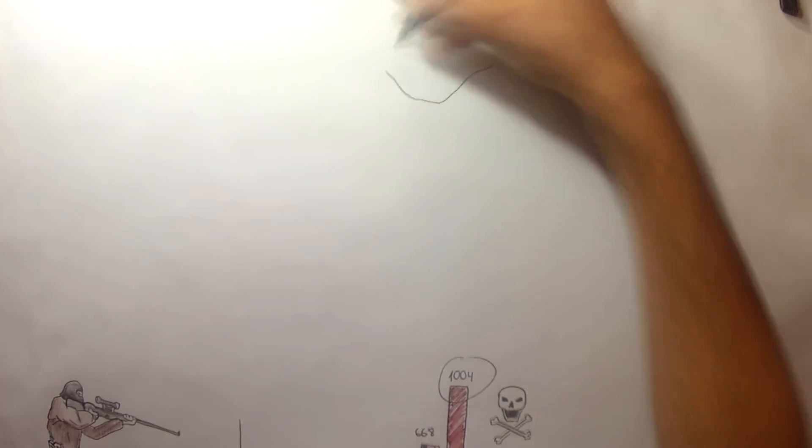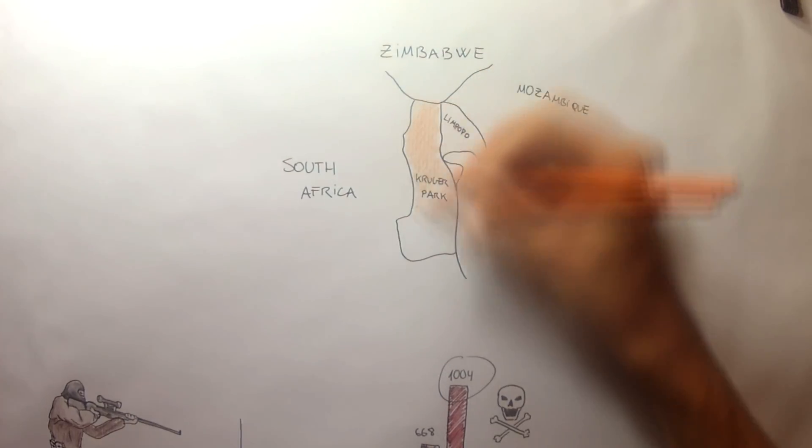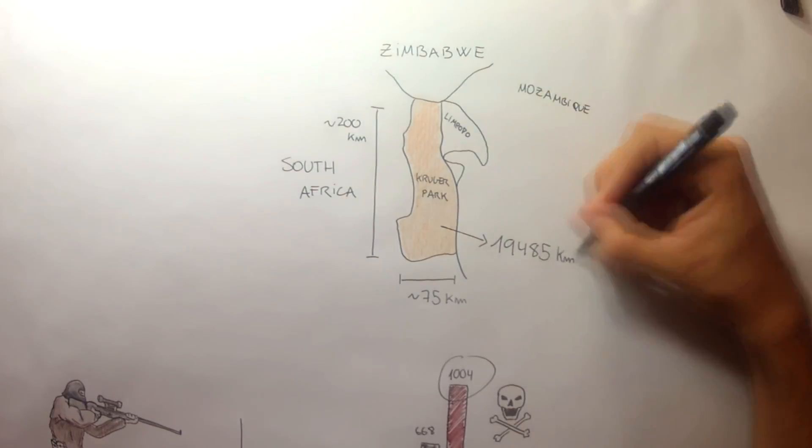The 400 rangers of the Kruger Game Reserve can't handle the situation. It's not possible to control such a large and badly communicated area day and night.